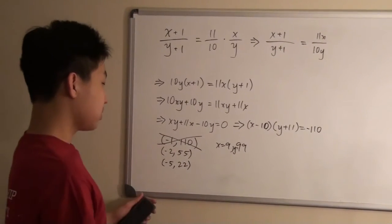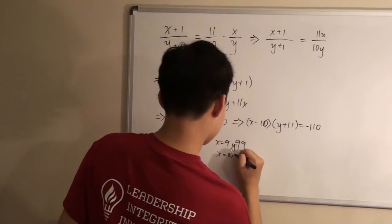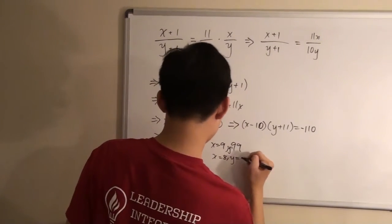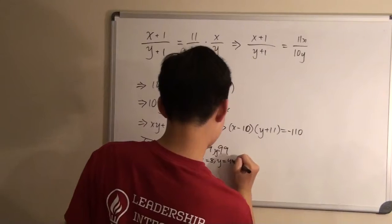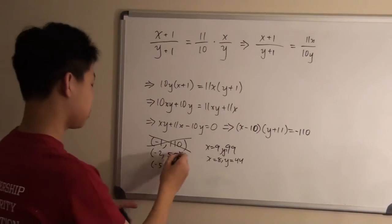And so, for the next one, x would be equal to 8, and y would be equal to 44. These two are also not relatively prime, so this also doesn't work.